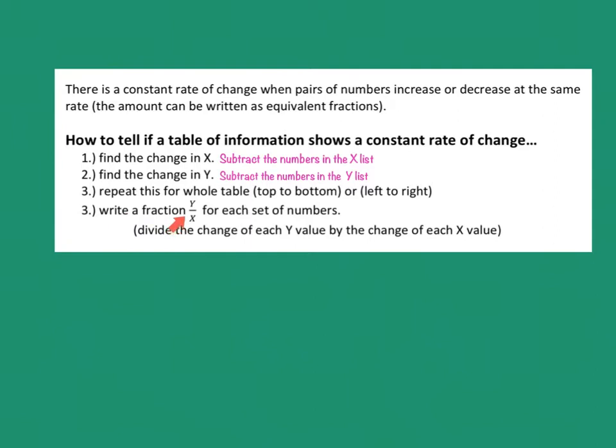Once we do that, we will make a fraction with those numbers we got when we subtracted. The numbers after you subtract will make a fraction. The y number goes on top, x number goes on bottom. I'm going to highlight that because it is important that the y is on top and the x is on bottom. We would divide that or simplify the fraction just to see how low it can go.